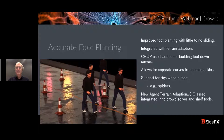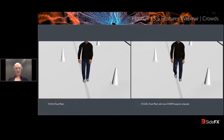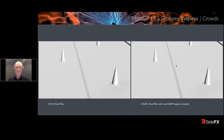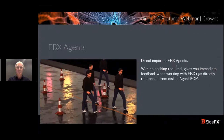Support for rigs without toes — like spiders — has been added. Here are a couple of examples: on the left is the 15.0 foot plant, on the right is 15.5 — the feet are a lot better behaved on the terrain. FBX agents — a big step forward. We can now directly import FBX agents right into Houdini via the Agent SOP without having to cache them out first, making it much quicker to turn things around since many FBX agents have a lot of complexity. The more you can reference directly off disk without caching, the more procedural things become.